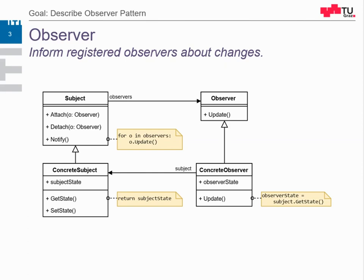What is the responsibility of the observers? The observer interface has one method called update. Whenever the subject data is changed, it calls the update method of the observer. Concrete observers react somehow on this — they override the update method and do something whenever they get notified. This is the classical implementation by the Gang of Four: it is the observer's responsibility to get the changed state. The observer has to call the get state method of the subject and react on that state. But different implementations are also possible — this is just the default one.